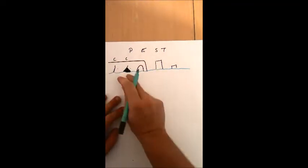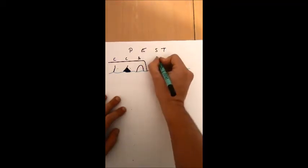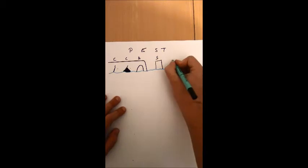We've then got our cave here, our arch showing by this bit of the diagram here, our stack, and then our stump.